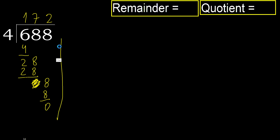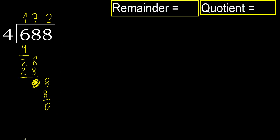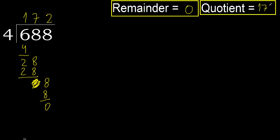Next — that is not a number, therefore finish. Remainder is 0. Therefore, 688 divided by 4 is 172.